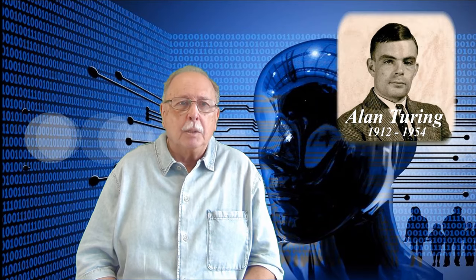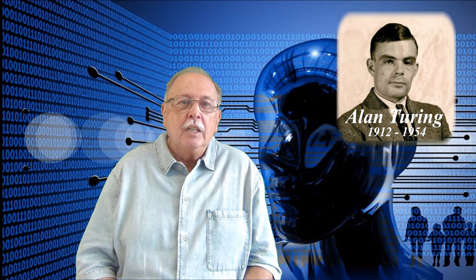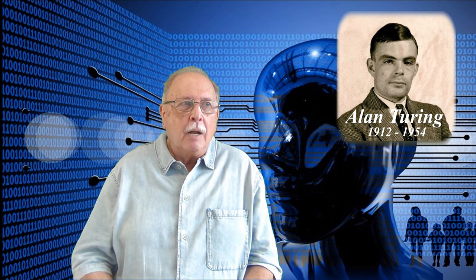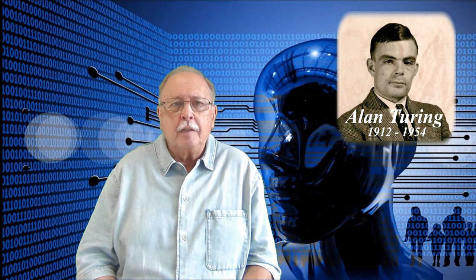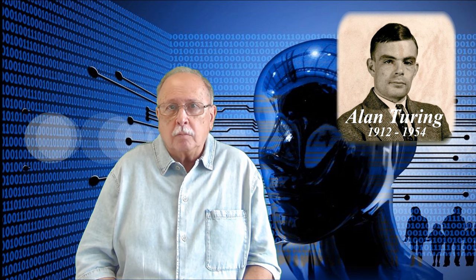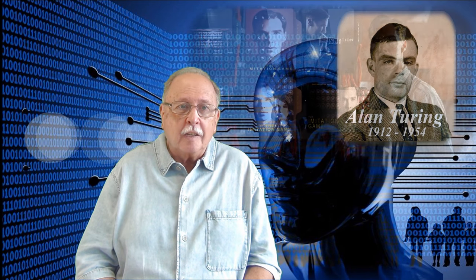În anul 1950, Alan Turing, matematician, logician și informatician avant la lettre, a propus un test pentru a identifica o posibilă inteligență artificială. În paranteză fie spus, puteți să vedeți, sigur, dramatizat și romanțat cum a reușit echipa lui Alan Turing să spargă codul mașinii Enigma pe care o folosea armata germană pentru a cripta mesajele importante în filmul The Imitation Game. Testul lui Turing spune, simplificând lucrurile, cam așa.